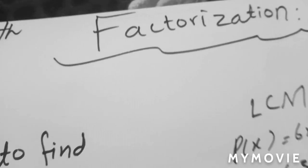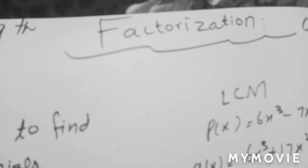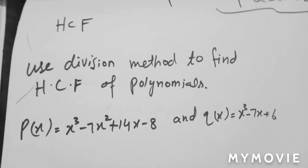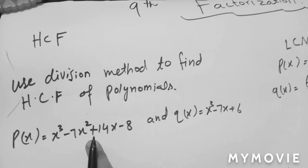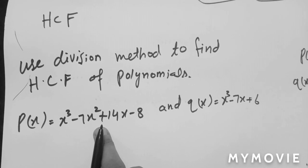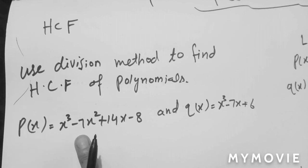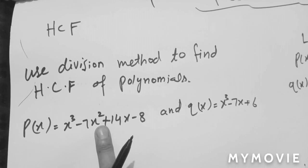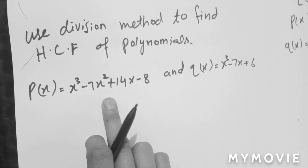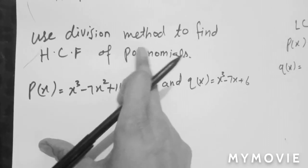Today I am going to do Chapter Number 6 of 9th class — Factorization Mathematics. Here we will do two questions: HCF and LCM. Don't think it is too easy like other classes. We have done HCF and LCM in lower classes like class 6 and class 7, but this is quite different and more difficult. Now I will start — how to solve it using the division method.